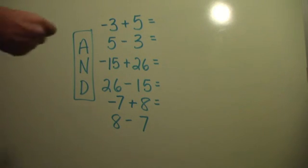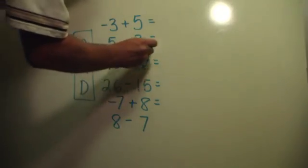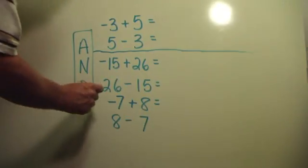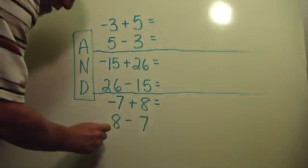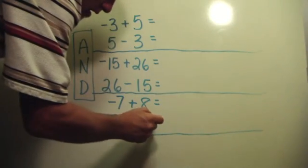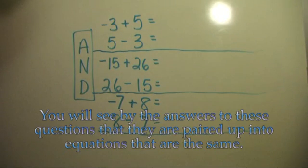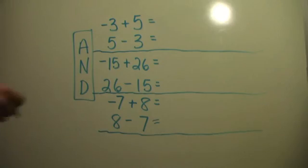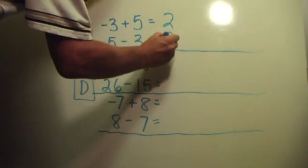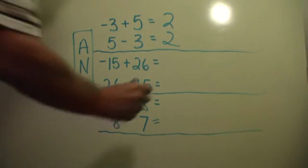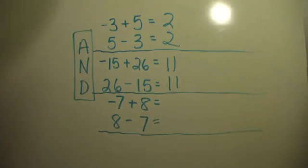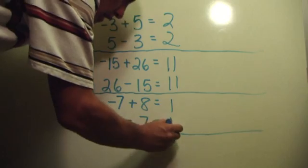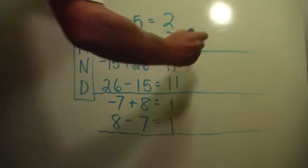Look at these equations and see what you see that are similar about the ones between the lines. Remember the word and. Top one, negative three and five. You'll see by the answers to these questions that they are the same exact question. Five minus three and negative three plus five are the same question. Negative fifteen plus twenty-six. Twenty-six minus fifteen. Same question. Same with the bottom two there.